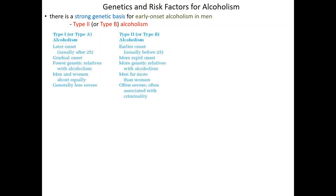There is a strong genetic basis for early-onset alcoholism, especially in men with XY chromosomes. This is termed type 2 or type B alcoholism. Type B alcoholism has an earlier onset — usually trouble drinking before age 25 — more rapid progression from first drink to problem drinking, stronger family history, greater prevalence in biological males, and is often very severe with a difficult recovery. Type 1 or type A alcoholism usually comes on later in life, after age 25, with a much longer window between first exposure and actual addiction, fewer relatives with alcoholism, roughly equal rates in men and women, and generally a less severe course that is easier to recover from.